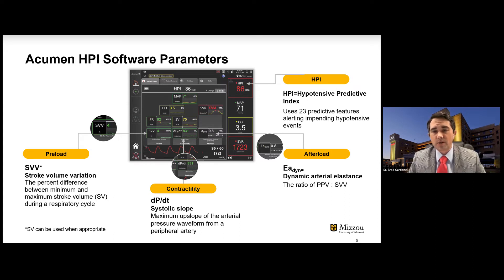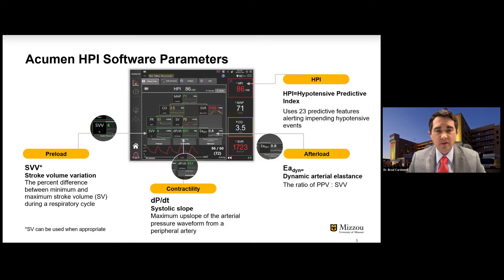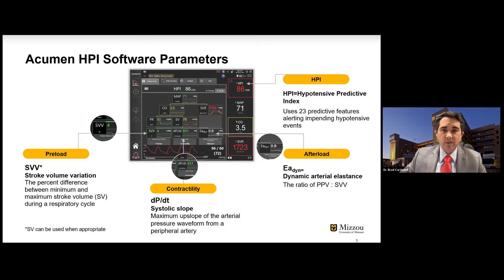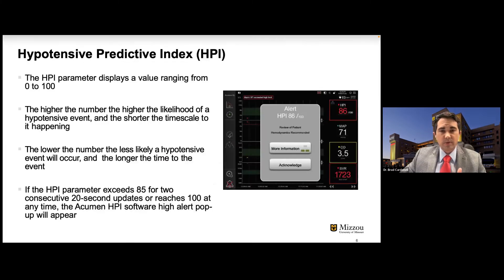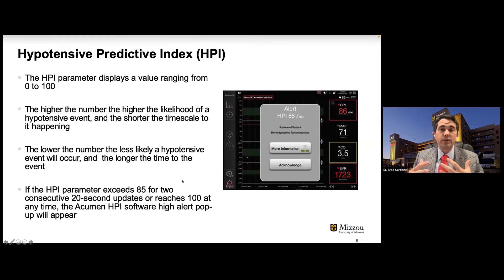There's also a newer parameter called Eadyne, or dynamic arterial elastance, which predicts the pressure response to an increase in volume in a preload-dependent patient. It shows us where the patient is on the elastance curve — whether fluid will actually treat the pressure or if we need another approach. Then we have our HPI number, which uses 23 predictive features to alert us to hypotension. The HPI number is not something you necessarily react to and treat directly — the goal is to alert you that you're likely becoming hypotensive.